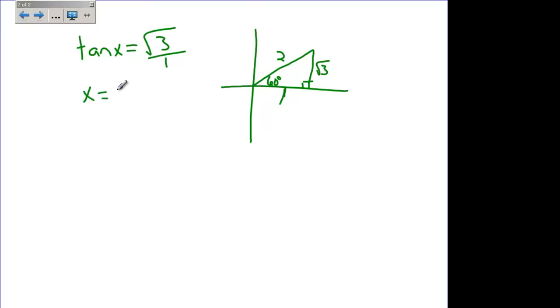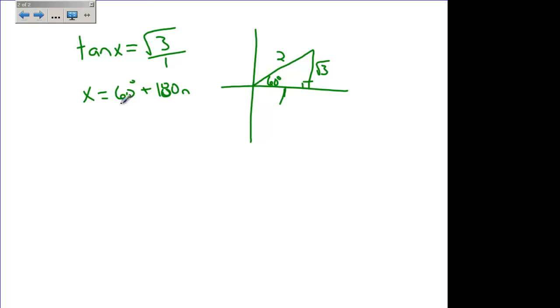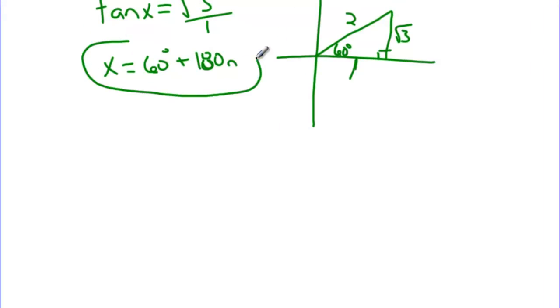And so your answer is 60 plus 180n. Tangent and cotangent have a period of 180, so you just add 180n, which gives you all of the answers, and you only need one equation for tangent. And that is all of those.